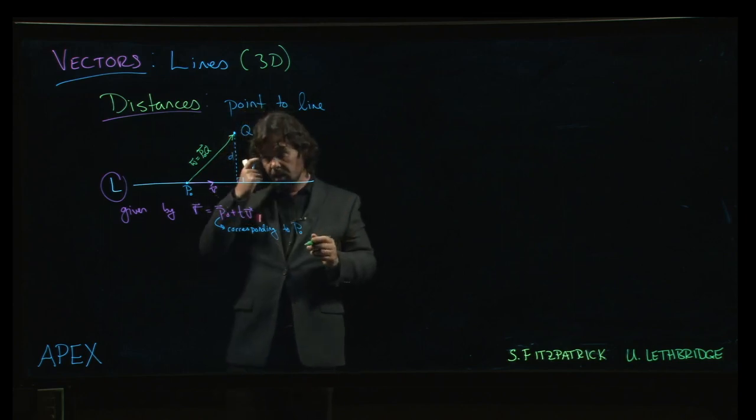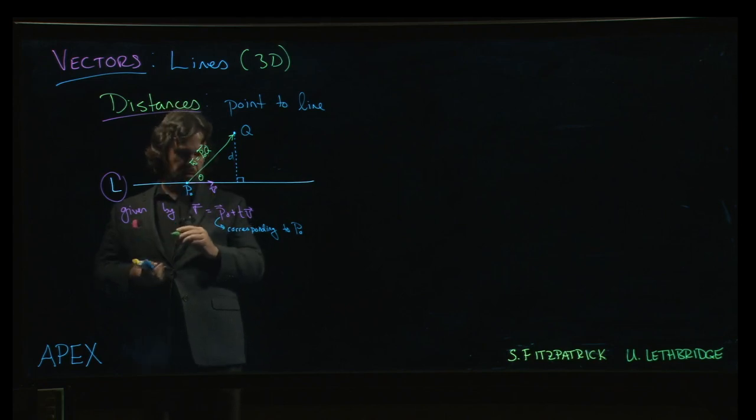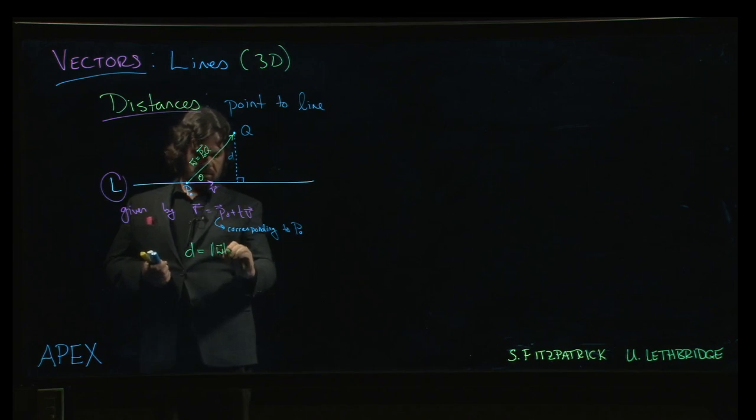One is the method that's done in the book, which is to say, we could introduce this angle theta here. And we could say that on the one hand, I know that this distance d I'm interested in is going to be the length of the hypotenuse. We've got a right angle triangle here, times the opposite side, so sine theta.